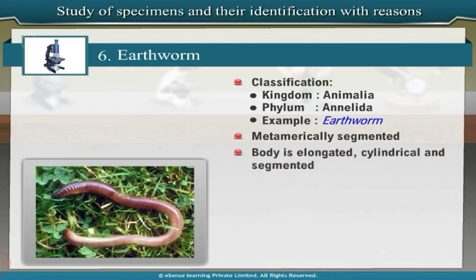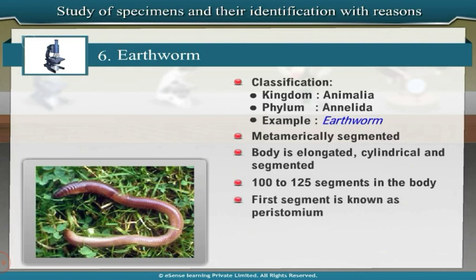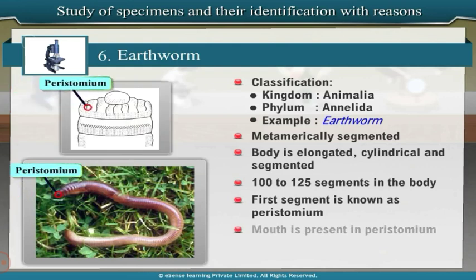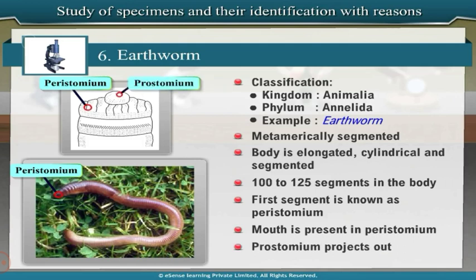The body is elongated, cylindrical and segmented. There are about 100 to 125 segments in the body. The first segment is known as peristomium. The mouth is present in peristomium. From the dorsal side of the peristomium, a sensory lobe called prostomium projects out.